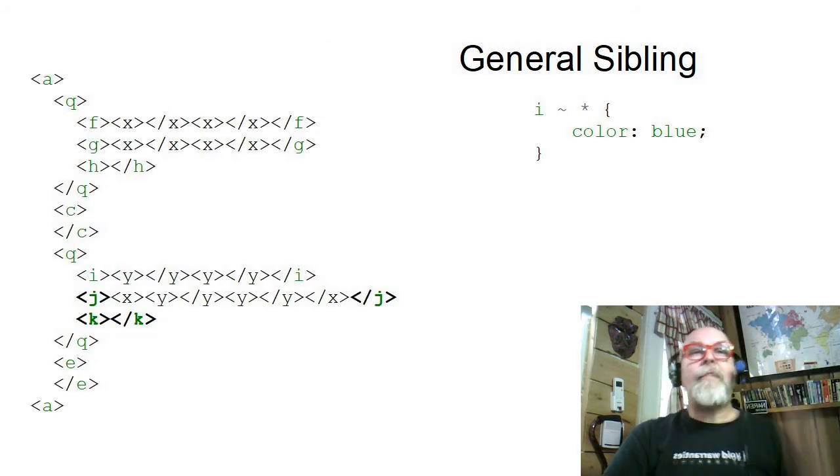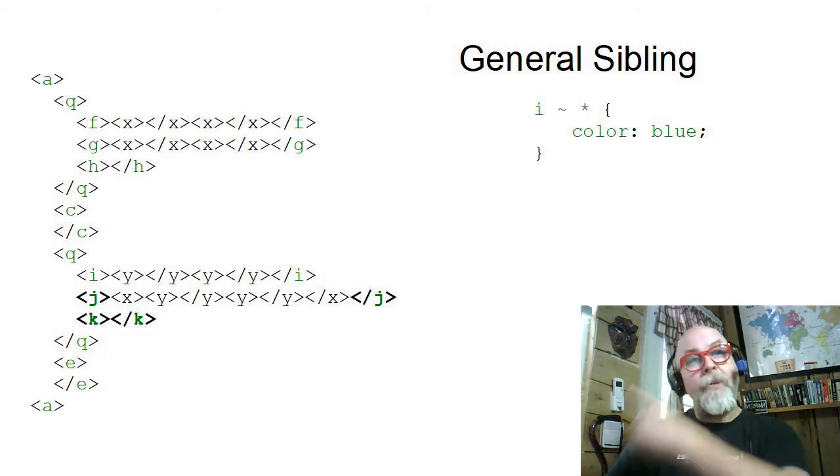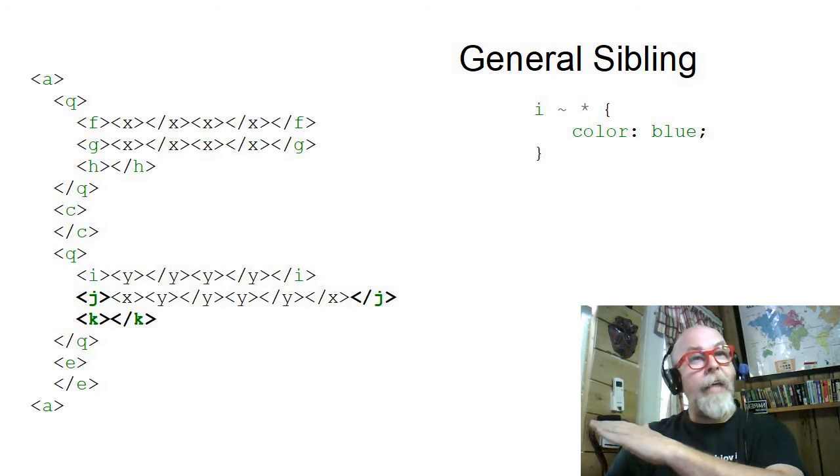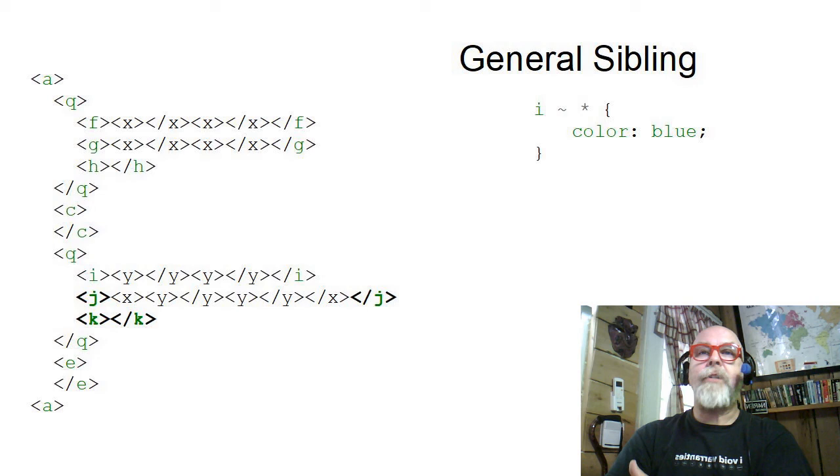Here in my style above, I say, give me all of the general siblings following the I tag. You can see that it found the I tag, and then it returned J and K because those are siblings of I at the same child level. They're at the same level. So it returned J and K, or the general sibling following the I tag.